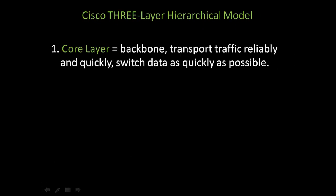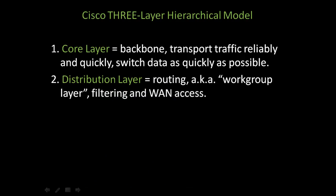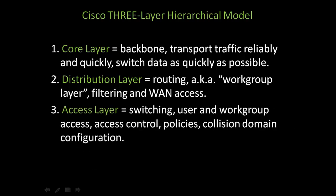In addition to the OSI seven-layer model, Cisco has its own three-layer hierarchical model. The first is the core layer, or backbone, with two primary functions: to transport traffic reliably and quickly, and to switch data as quickly as possible. The second is the distribution layer, or routing layer, also known as the workgroup layer, whose primary function is filtering and wide area network access. The third is the access layer, whose functions are switching, user and workgroup access, access control, policies, and collision domain configuration.